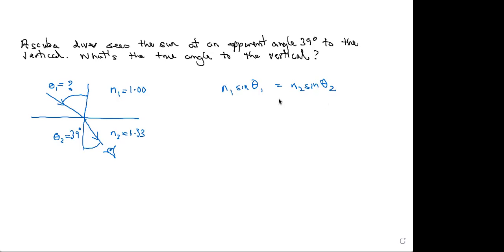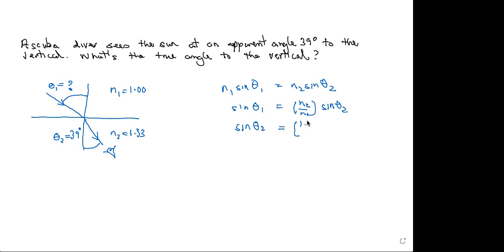I know the refractive indices of both media — 1 and 1.33 — and I know the refracted angle. I don't know the incident angle, so I've just got to rearrange this equation. Sine theta 1 equals N2 over N1 times sine theta 2. We know the values of the refractive indices and the refracted angle, so we can just substitute those in: 1.33 over 1 for the ratio of the refractive indices, times the sine of 39 degrees.